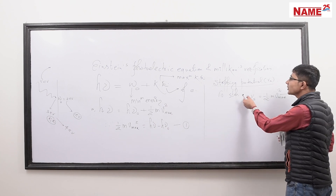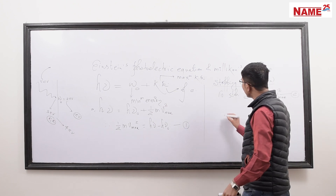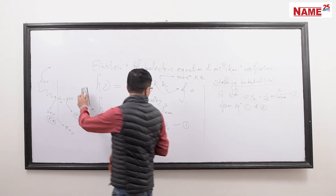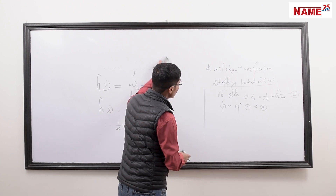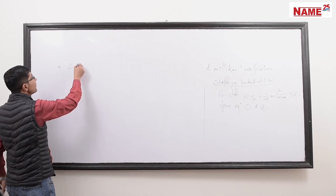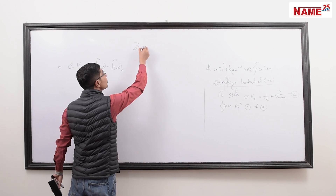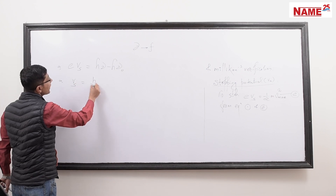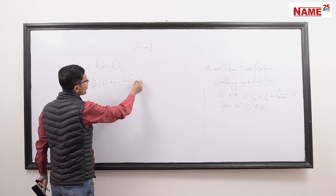Combining equations 1 and 2: since both equal ½mv²max, we equate them. So eVs = hν − hν₀. Dividing by e: Vs = (h/e)ν − (hν₀/e). This is in the form y = mx + c, a straight line equation.